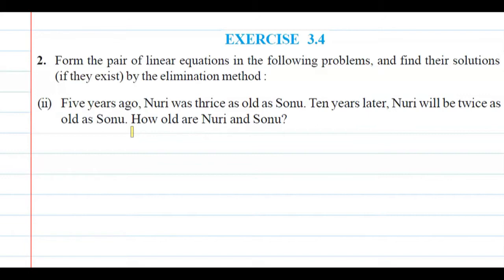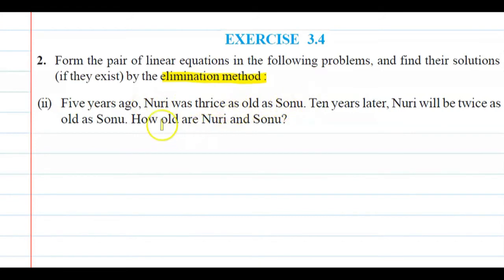This question asks us to create a linear equation and solve it by the elimination method. When students have word problems, they don't actually visualize anything. There are two characters: one is Nuri and one is Sonu. You can think of yourself as Nuri or Sonu, or imagine you are a third person and Nuri and Sonu are friends, to make the problem feel like real life.